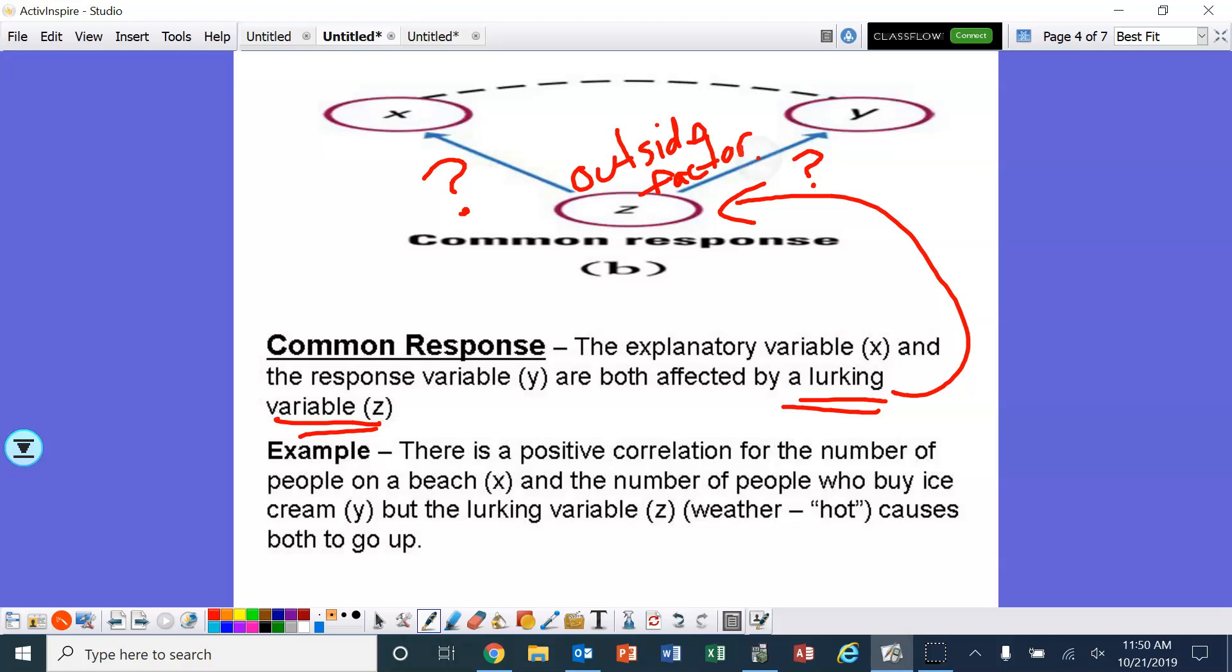Okay, for example, there is a positive correlation for the number of people on the beach and the number of people who buy ice cream. But the lurking variable, which is the weather, causes both to go up. Just because people are on the beach does not mean they're going to buy ice cream. All right, it looks like there's a positive association there, but it's the weather. As the weather gets warmer, there's more people on the beach and there's more people buying ice cream. All right, so that's common response.